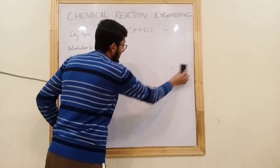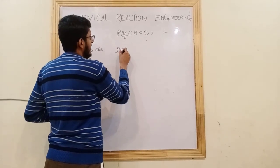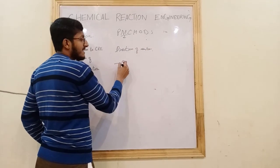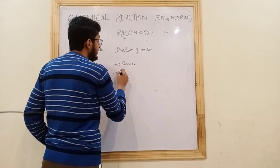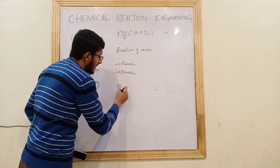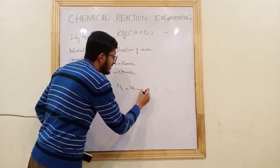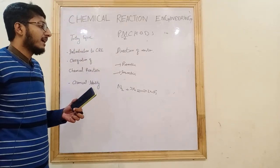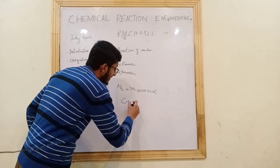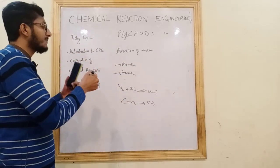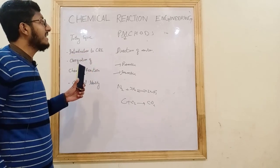Next is D for Direction of reaction. Reactions can be reversible or irreversible. In a reversible reaction, such as N2 plus 3H2 forming 2NH3, reactants convert to products and products can convert back to reactants. In an irreversible reaction, such as carbon plus O2 forming CO2, the products cannot revert — CO2 cannot change back into C and O2.